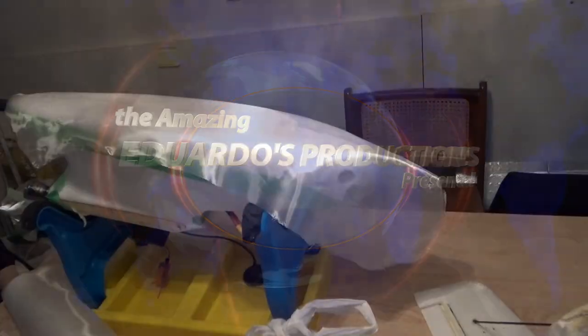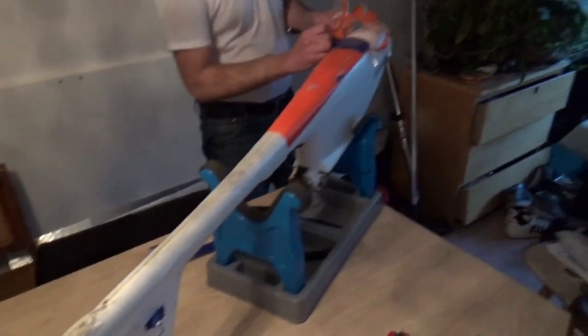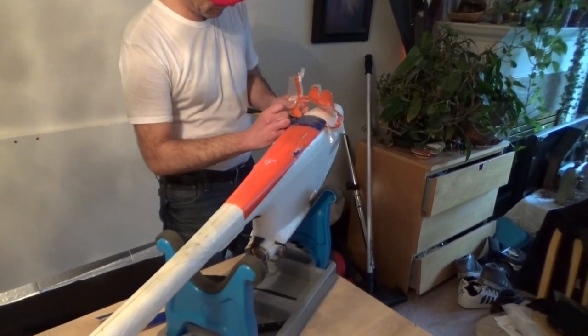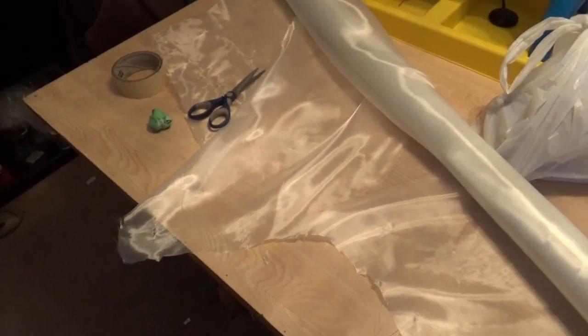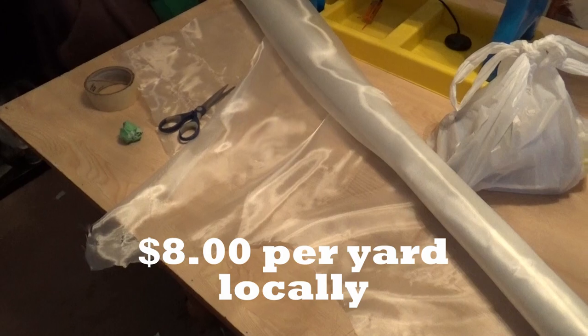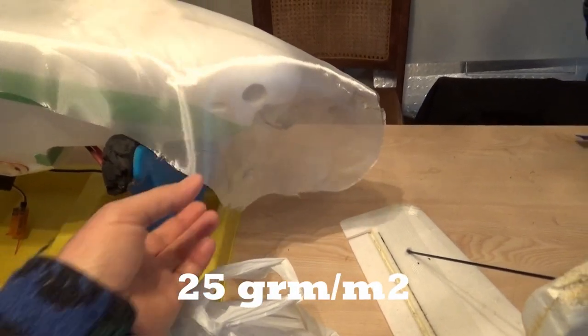Here we're getting ready for fiberglassing the bottom of the Skywalkers. We're in the process of taking the stuff from here. So we got this cloth. It's 25 grams per square meter. It's very thin fiberglass.